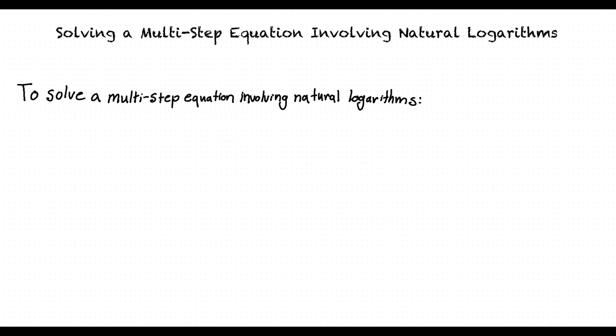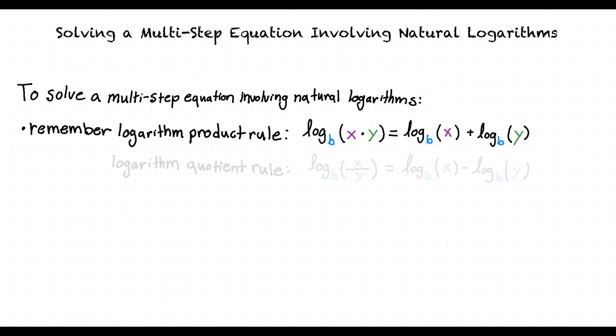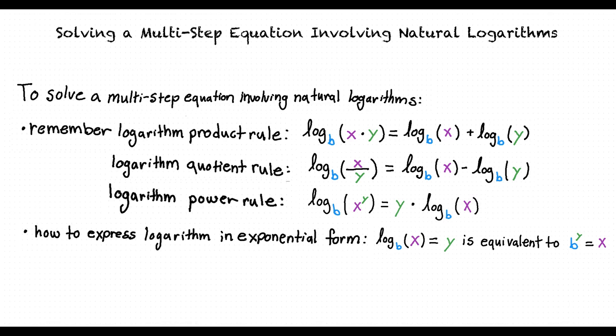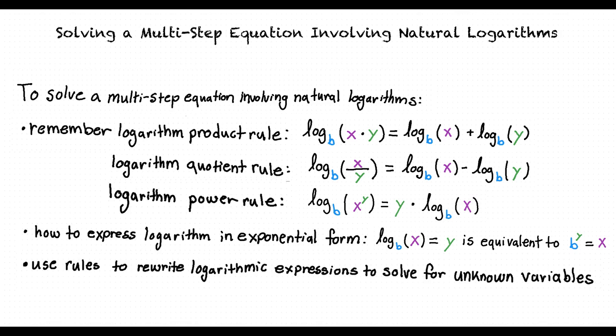To solve a multi-step equation involving natural logarithms, there are certain rules that should be remembered, such as the logarithm product rule, the logarithm quotient rule, and the logarithm power rule. It's also important to remember how to express a logarithm in its exponential form. Using these rules, we can rewrite logarithmic expressions in different ways that allow us to solve for the given variables.